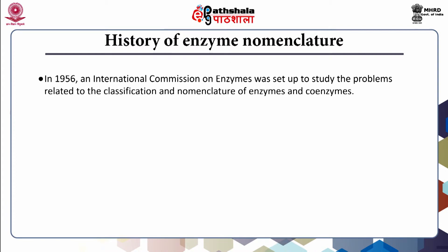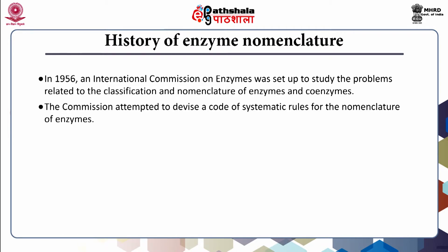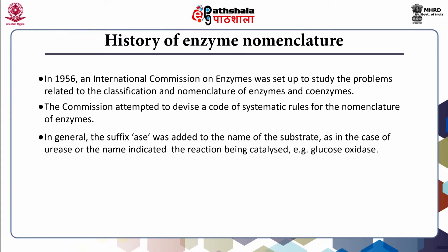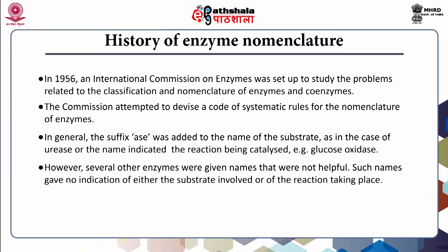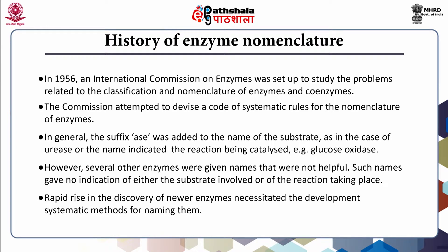In 1956, an international commission on enzymes was set up to study the problems related to the classification and nomenclature of enzymes and coenzymes. The commission attempted to devise a code of systematic rules for the nomenclature of enzymes. In general, the suffix '-ase' was added to the name of the substrate, as in the case of urease, or the name indicated the reaction being catalyzed, for example, glucose oxidase. However, several other enzymes were given names that were not helpful and gave no indication of either the substrate involved or the reaction taking place. The rapid rise in the discovery of enzymes necessitated the development of systematic methods for naming them.